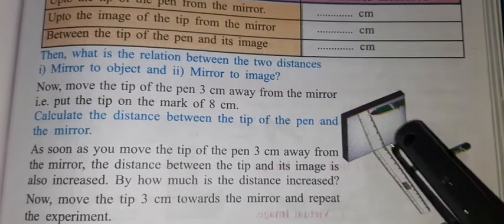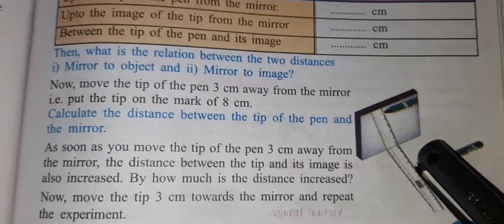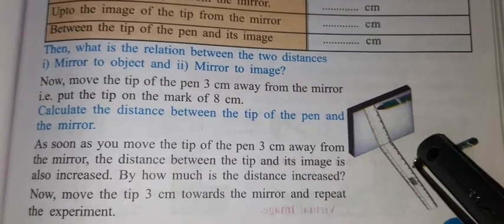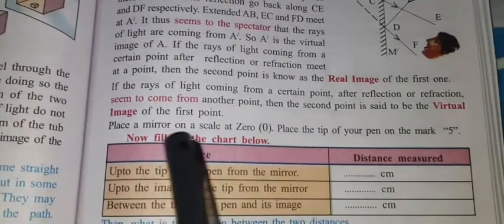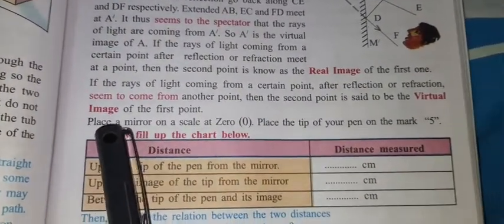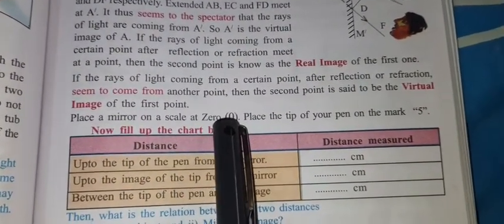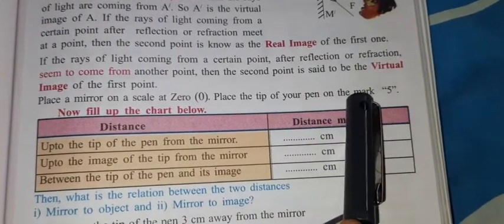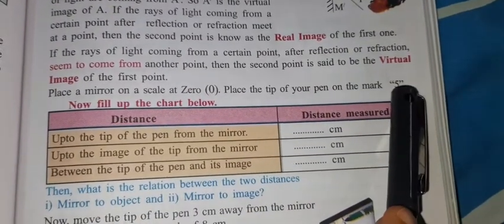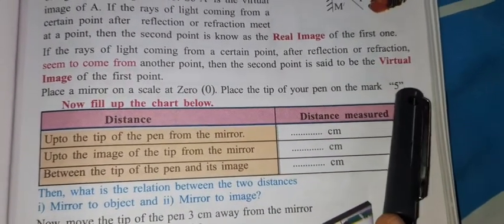The mirror is placed at 0 on the scale. Place the tip of your pen on the mark at 5 cm. Let us start the experiment — place a mirror on a scale at 0, place the tip of your pen on the mark 5. What do you observe?